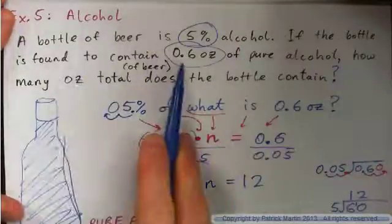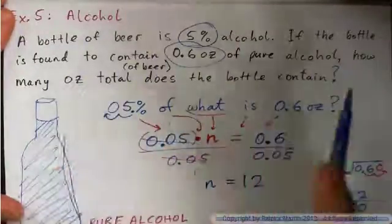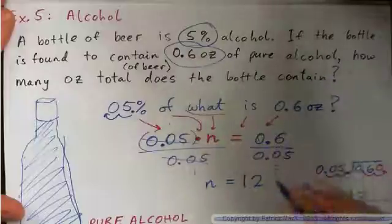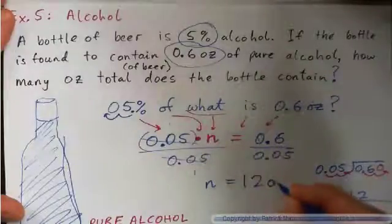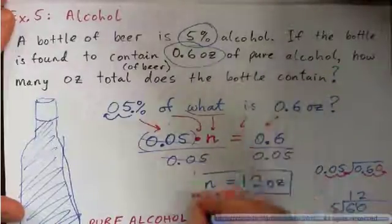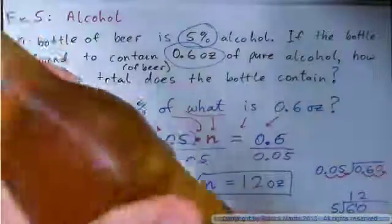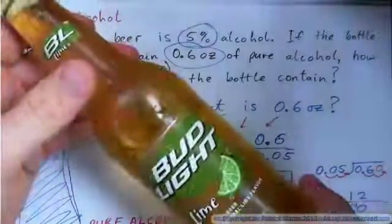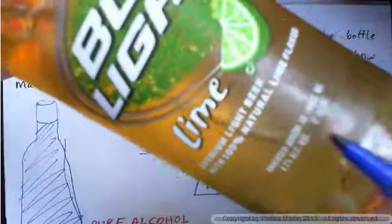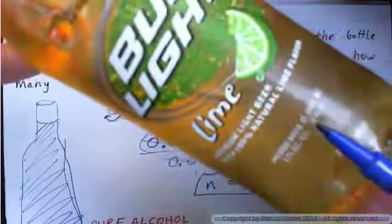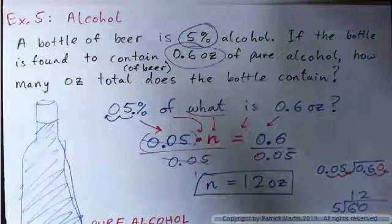The bottle contains 0.6 ounces of pure alcohol, so 5% of what is 0.6 — and the answer is 12 ounces. It is indeed a 12-ounce bottle of beer.